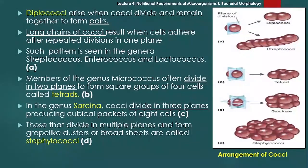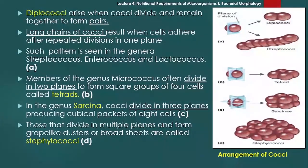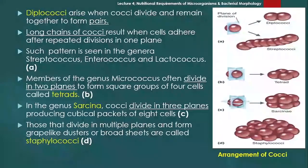Sarcina میں three planes of division ہوتی ہے اور eight cells بنتے ہیں۔ وہ bacteria جو multiple planes میں divide ہوں اور grape-like clusters یا broad sheets بنائیں — ان کو staphylococci کہتے ہیں۔ اگر bacteria 3 سے زیادہ planes میں divide ہو تو bunch-like structure بنتا ہے — انگور جیسا structure۔ اس کو staphylococci بولتے ہیں جو diagram کے part D میں دیکھا جا سکتا ہے۔